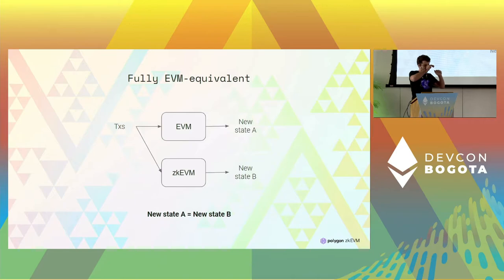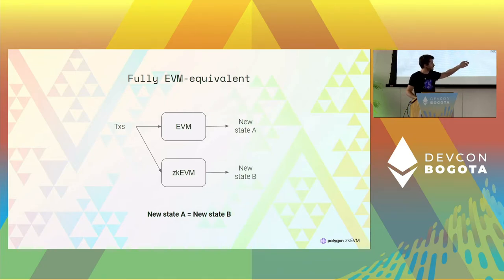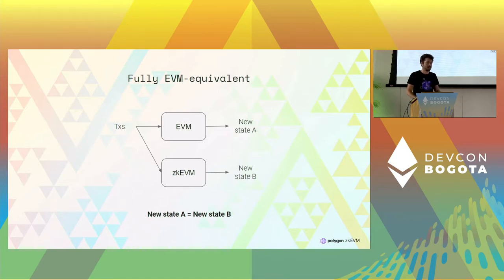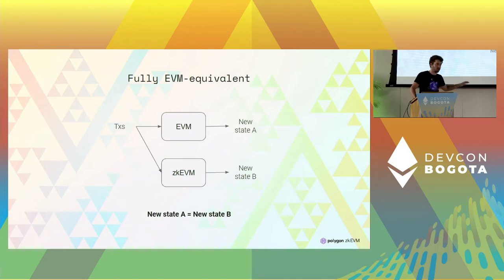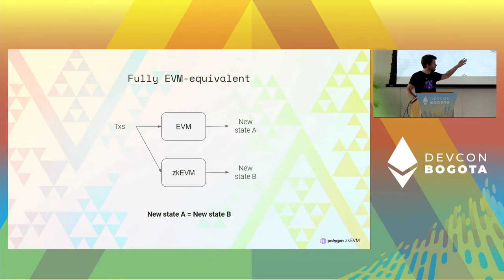When we talk about equivalence, we're talking about putting a batch of transactions in the EVM and putting exactly the same batch in the zkEVM and getting the same state — the same state root. When they have the same state root, it means the storage and the state of the blockchain is exactly the same: all accounts have the same balance, the same nonce, the same value code, the same storage. They are exactly the same. So they are different black boxes internally, but equivalence means that for the same input, they have the same output.